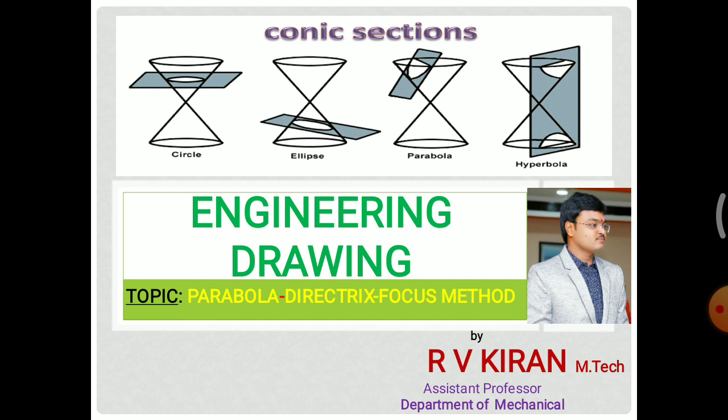This is the last construction method of the parabola curve. Parabola is an open curve compared to the ellipse, which is a closed curve. Going to the construction of the directrix method, it has an eccentricity. We have already discussed eccentricity in the ellipse construction method and also in the general method. For the ellipse, the eccentricity is less than 1, and for the parabola it is equal to 1, that is E is equal to 1.